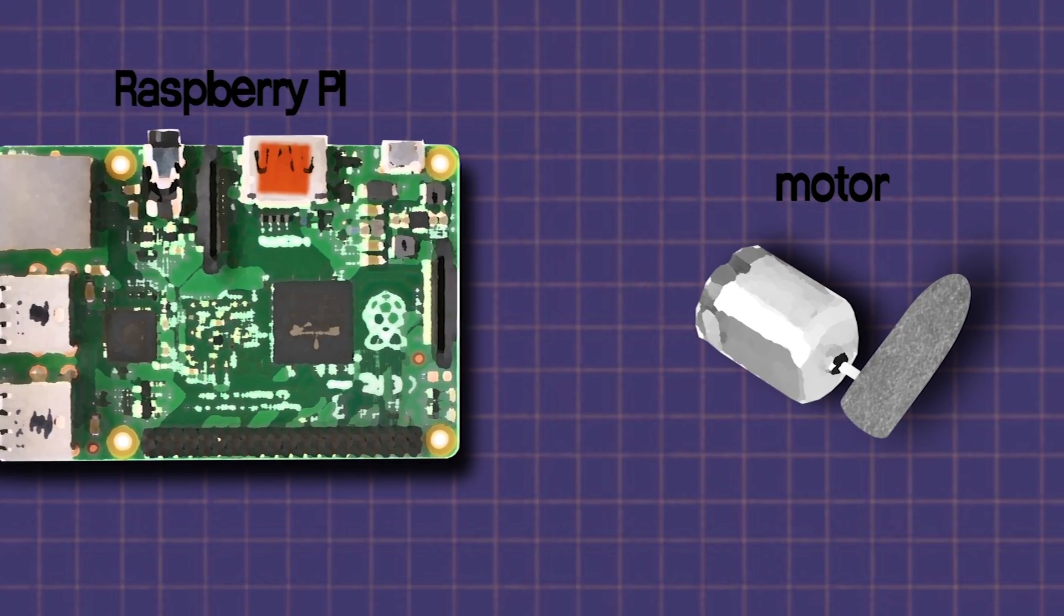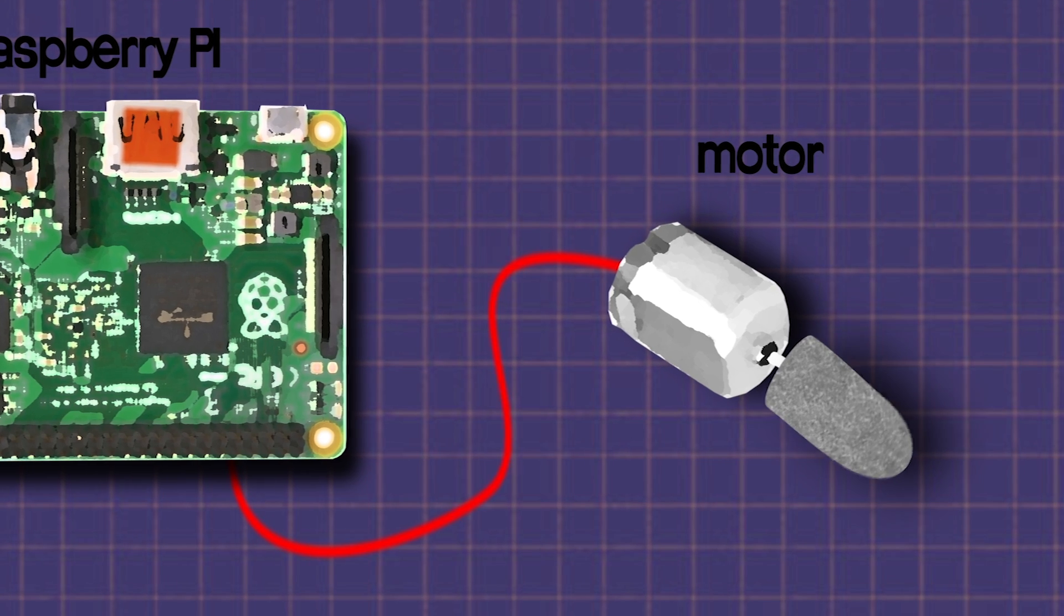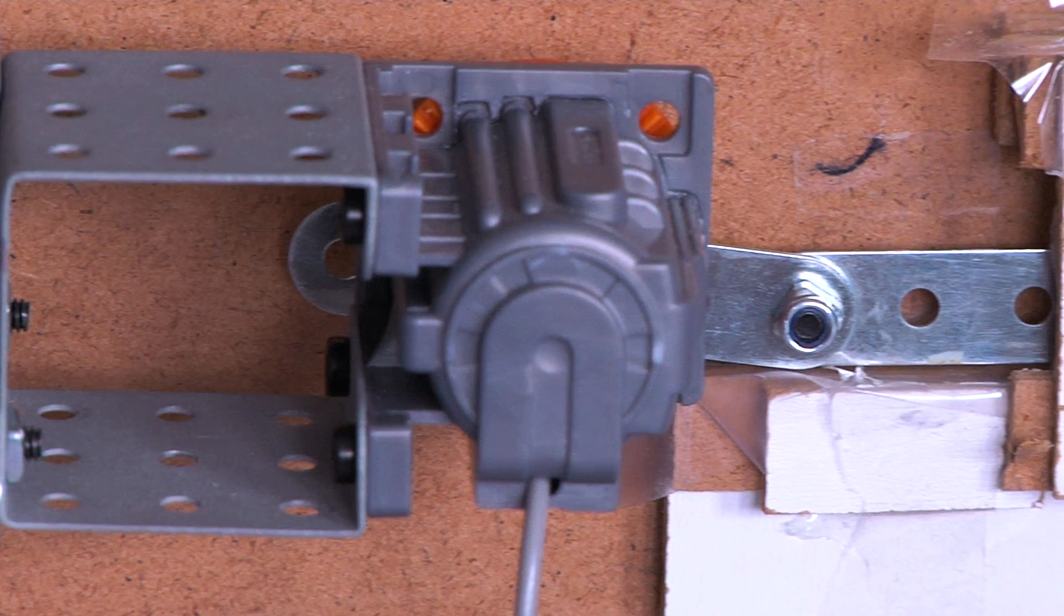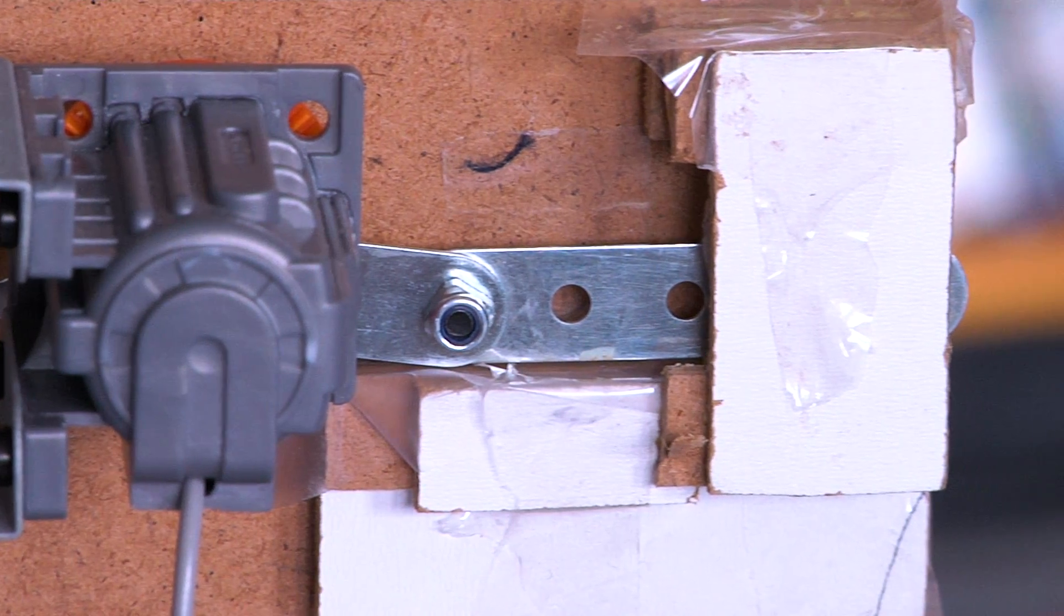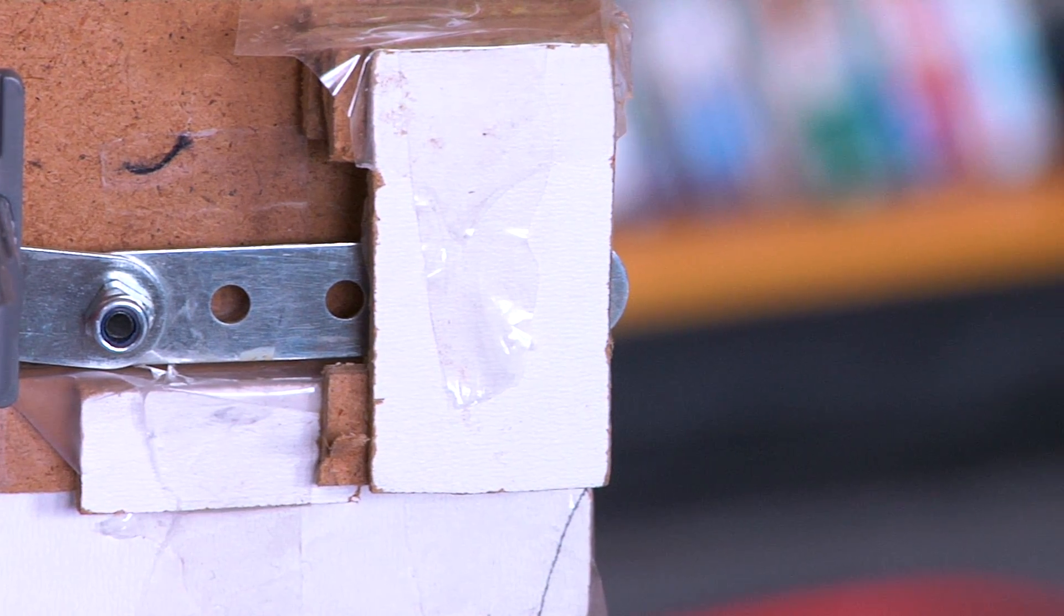For the lock, we used a small motor that would turn the lock when the computer tells it to. This involved a bit of trial and error as well. I worked hours and hours trying to get the motor to spin perfectly through the lock.